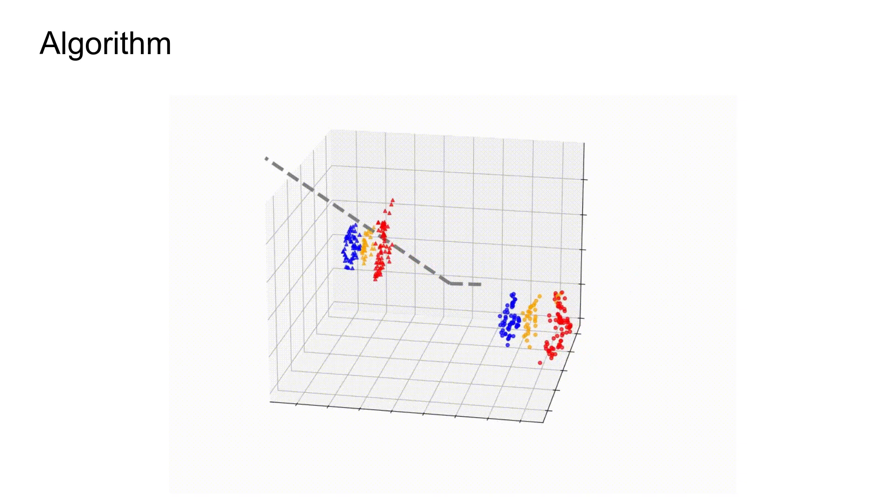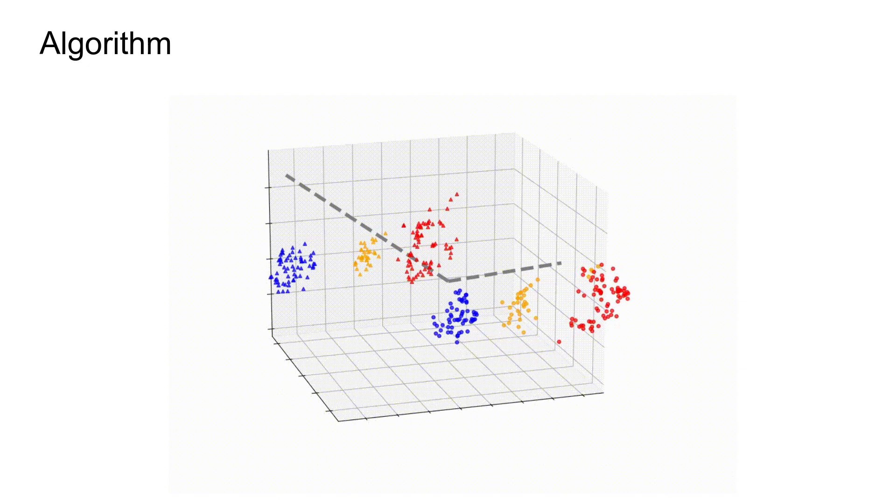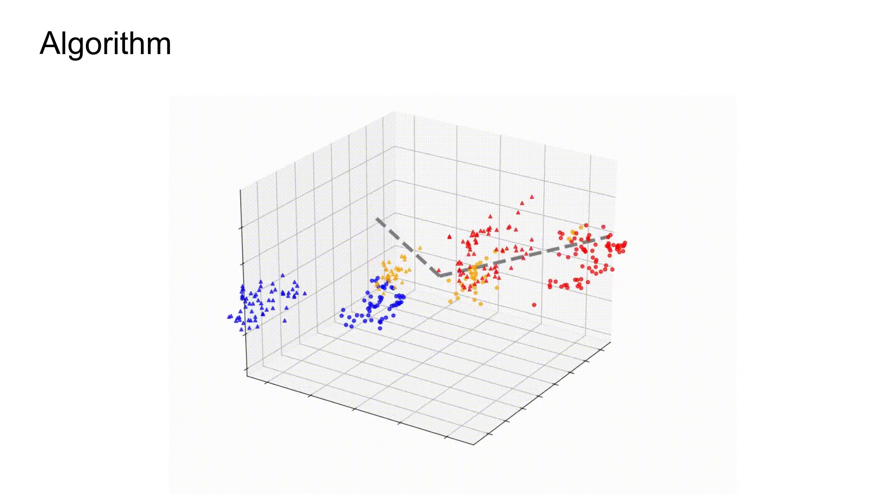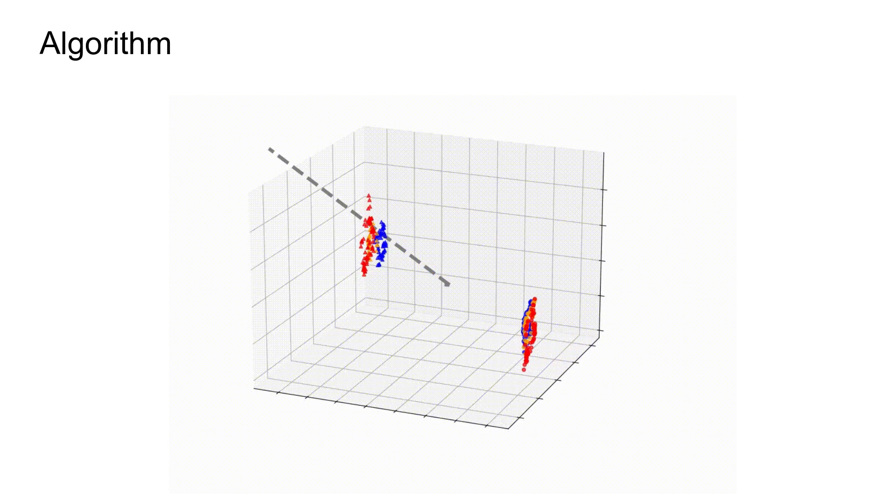Our algorithm proceeds as a generalization of regular t-SNE. Given a list of similarity matrices, we find a 3D embedding paired with a set of projections that each capture a similarity matrix in the image. We optimize both the 3D embedding and projections simultaneously so that each can influence the other. We use gradient-based optimization techniques to minimize our objective function.